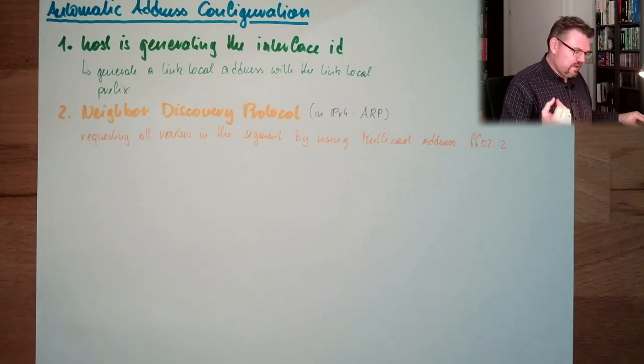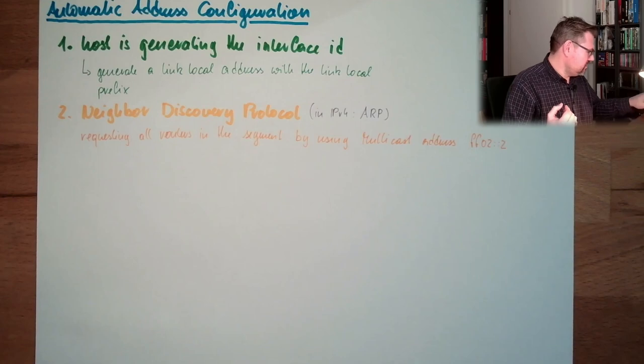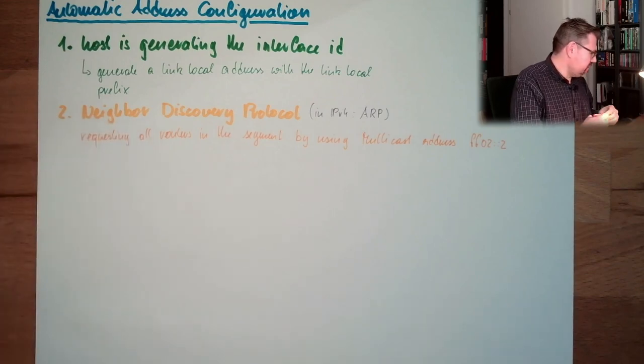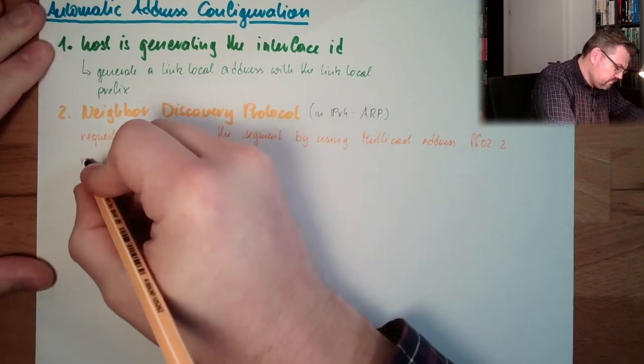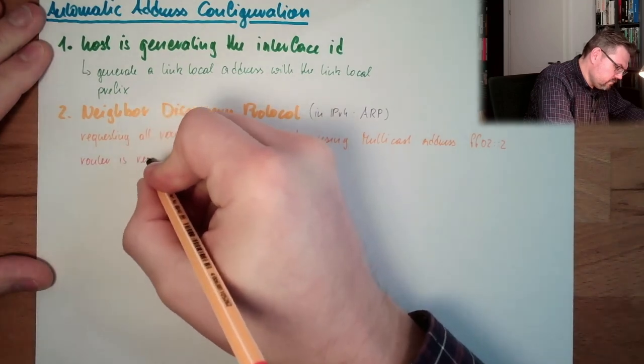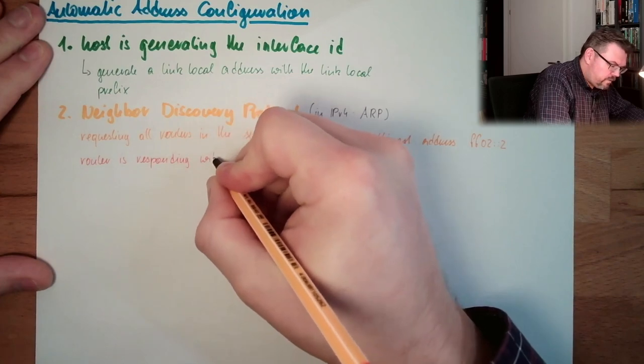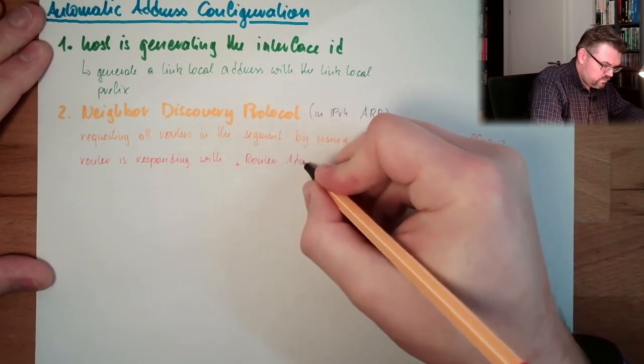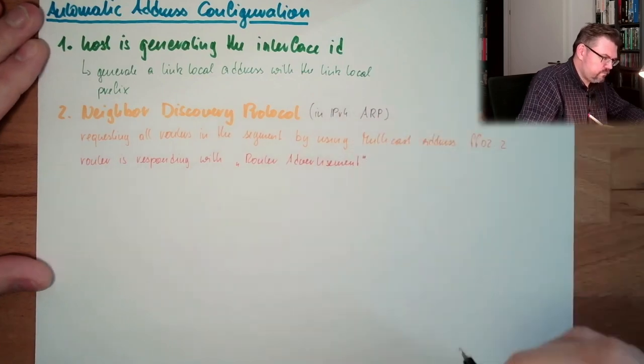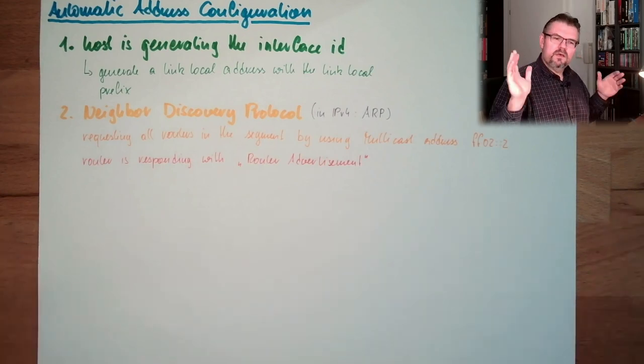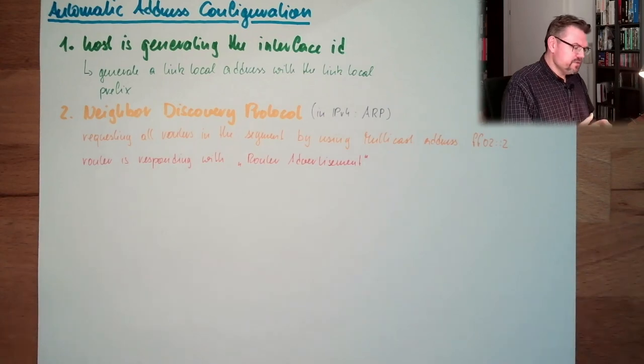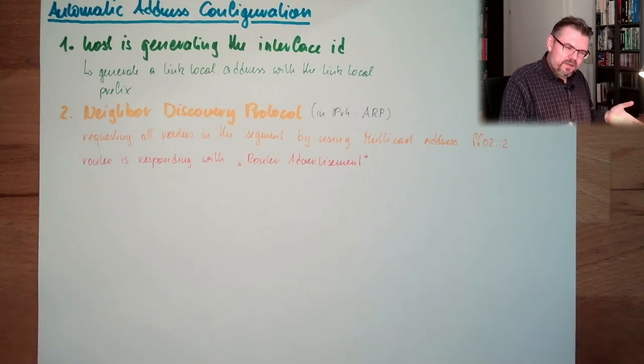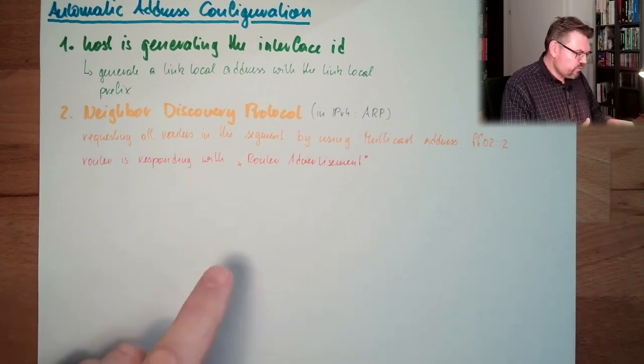And this router response, they are called a router advertisement. This is also now a neighbor discovery protocol. This belongs together. So I will simply write it. Router is responding with the so-called router advertisement. So the router, we are requesting, hey routers, where are you? The router is responding with the so-called router advertisement. Those router advertisements are not only sent in case they are requested, they are also sent periodically. There is a reason for that.